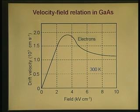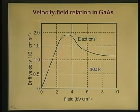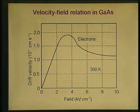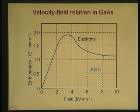Next, let us look at the velocity-field relation in a compound semiconductor such as gallium arsenide. Here the behavior is shown for electrons. For high electric fields there is saturation and for low electric fields there is linear behavior. But in between these two regions there is a region where the velocity decreases with the electric field. This is a unique feature of drift transport in compound semiconductors in general.